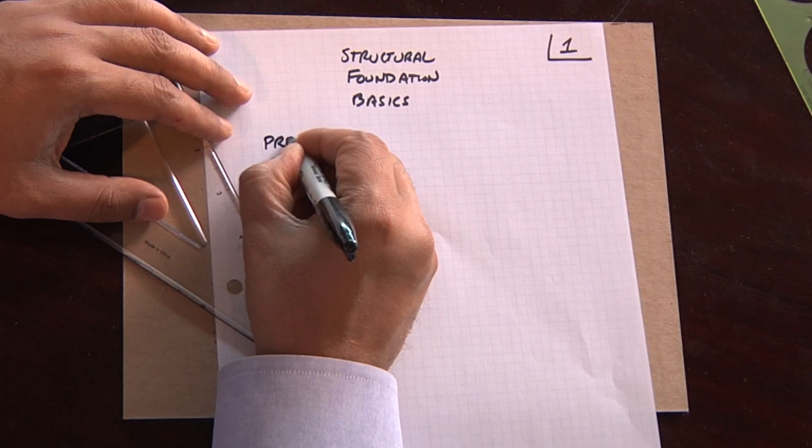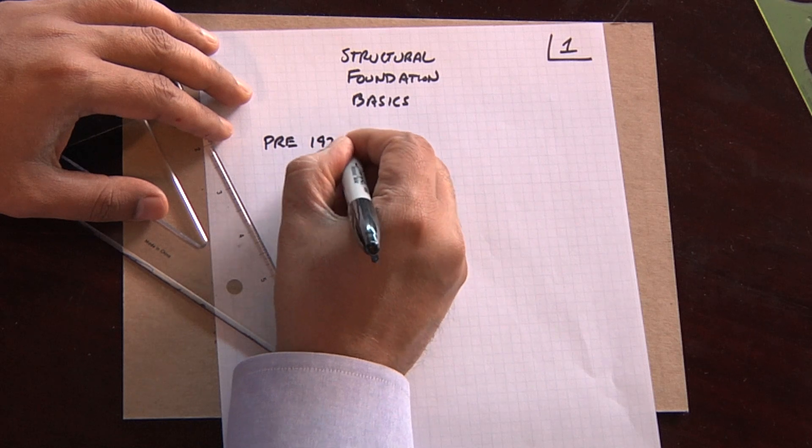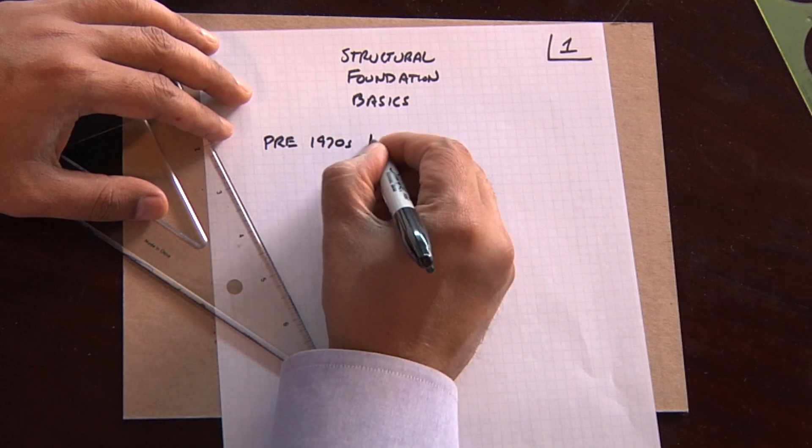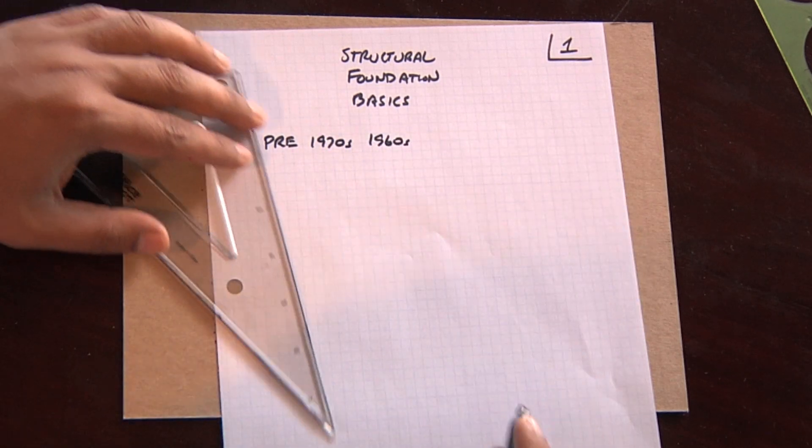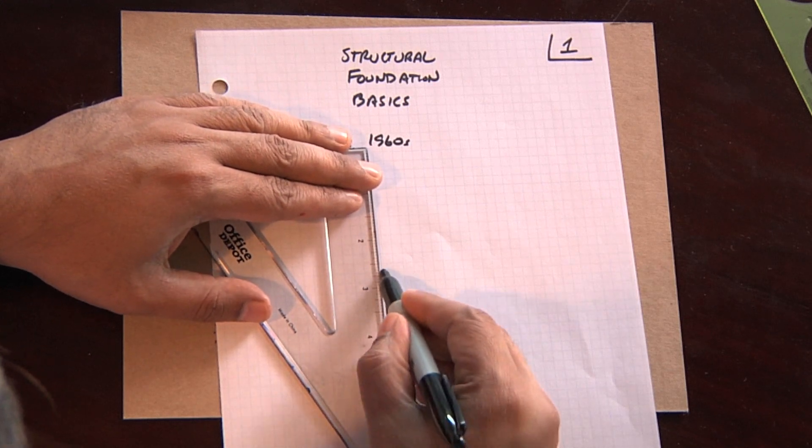Let's understand there are two types of foundations that are used for building design in the residential and multifamily context. This was done essentially before 1970s, pre-1970s, 1960s. The majority of our buildings were constructed as follows.